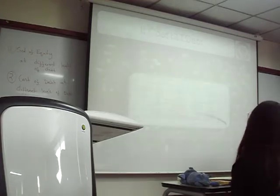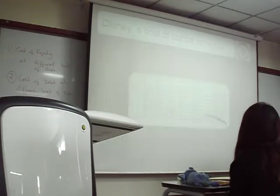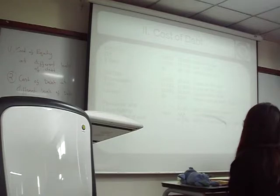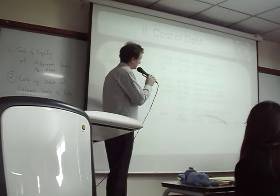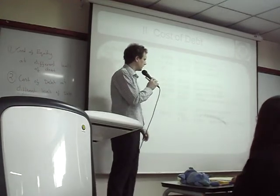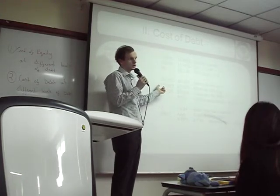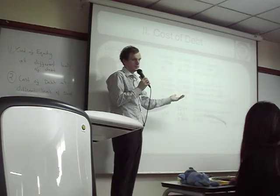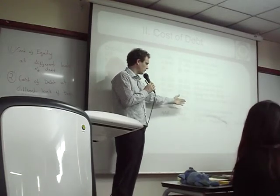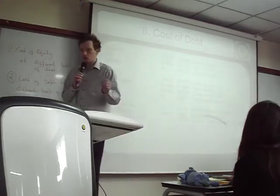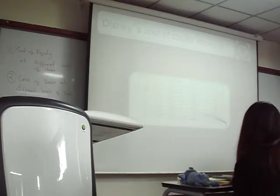The more complicated part is calculating the cost of debt because we need to use the interest coverage ratio. We find the interest expense at each different level of debt. If I have 20% debt, my interest expense is higher than at 10% debt. As my interest expense goes up, my EBIT over interest expense ratio goes down. I have a worse rating and my cost of debt goes up.